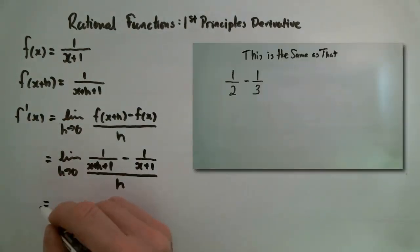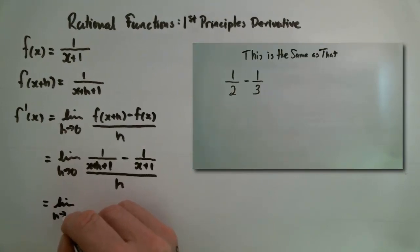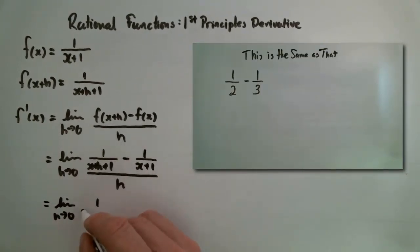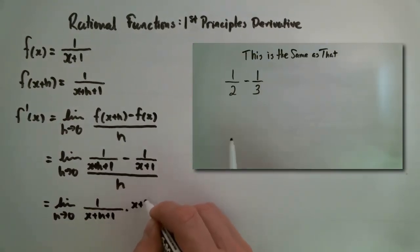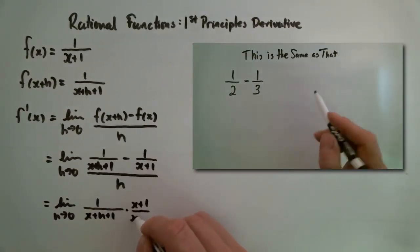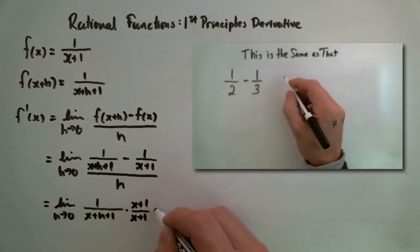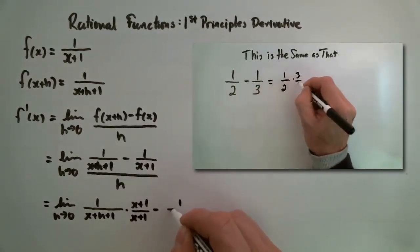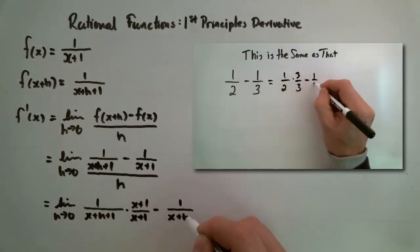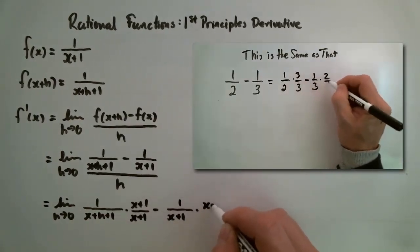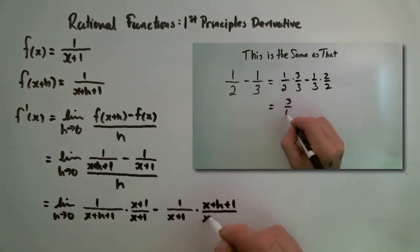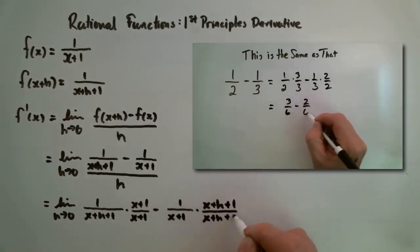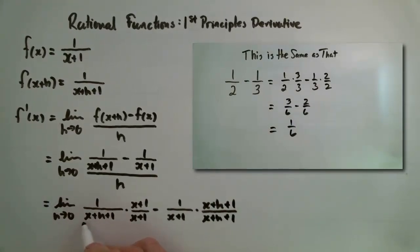Welcome to this episode of 'This is the same as that.' Mr. Rogers is undergoing a difficult operation that's basically the same as subtracting fractions. Normally what we do is find a common denominator. So I would multiply 1/2 by 3/3 and multiply 1/3 by 2/2, and it becomes 3/6 minus 2/6, which is 1/6. This is the same as that.